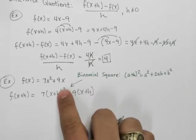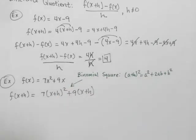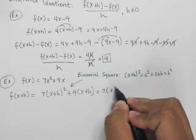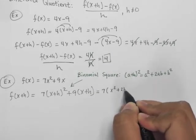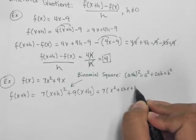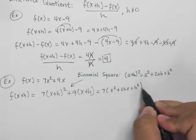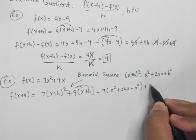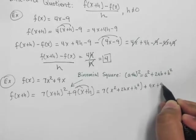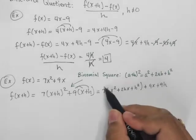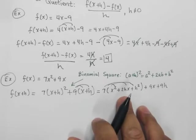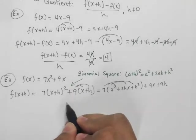So this is a binomial square. So I'm going to expand this very quickly. I'm going to get 7 times x square plus 2hx plus h square, and then I'm going to distribute this right here, and I'm going to get plus 9x plus 9h. Now I'm going to distribute the 7, and then try to see if I can't combine any like terms.